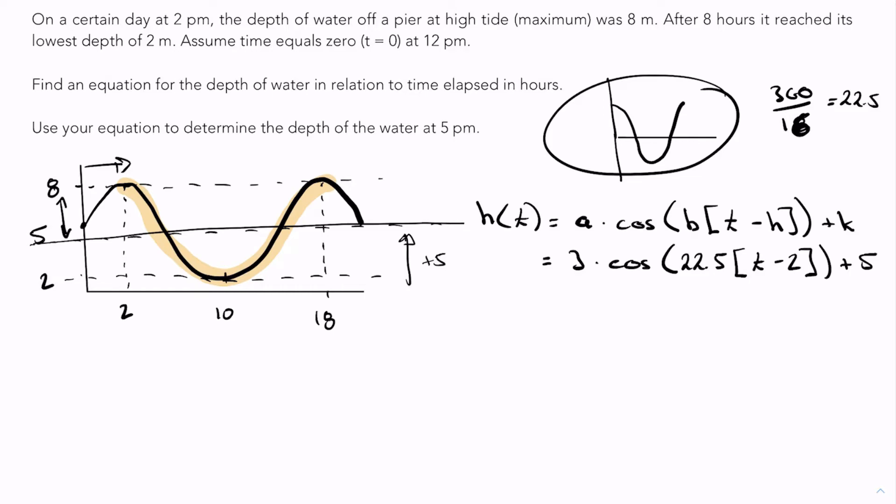We now want to use it to determine the depth of the water at 5 p.m. So h of 5 equals 3 times cosine 22.5 times (5 minus 2) plus 5. What does that give us? 3 times cosine of (5 minus 2 is 3), 3 times 22.5, that will be 60 plus 2.5, which is 67.5, plus 5.